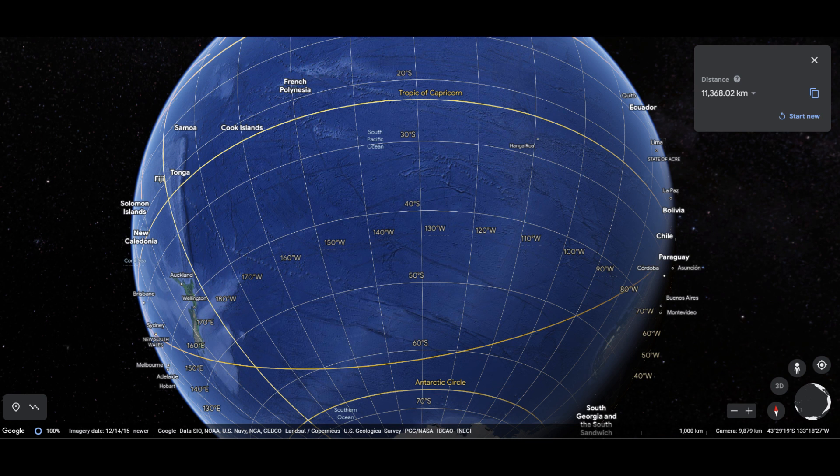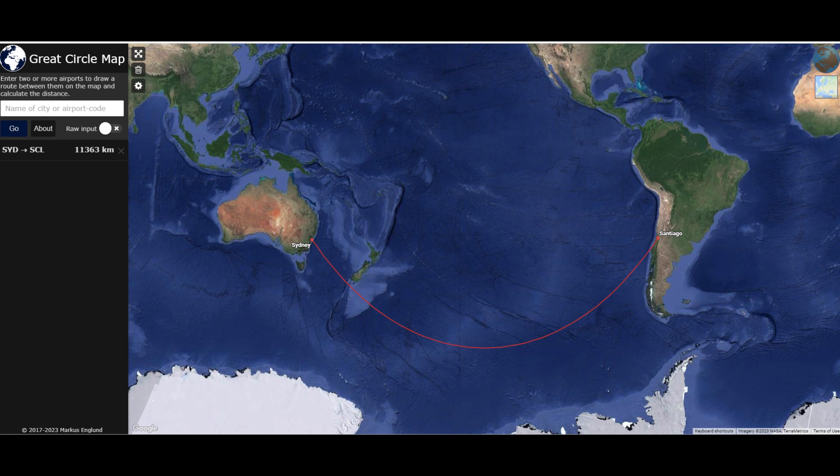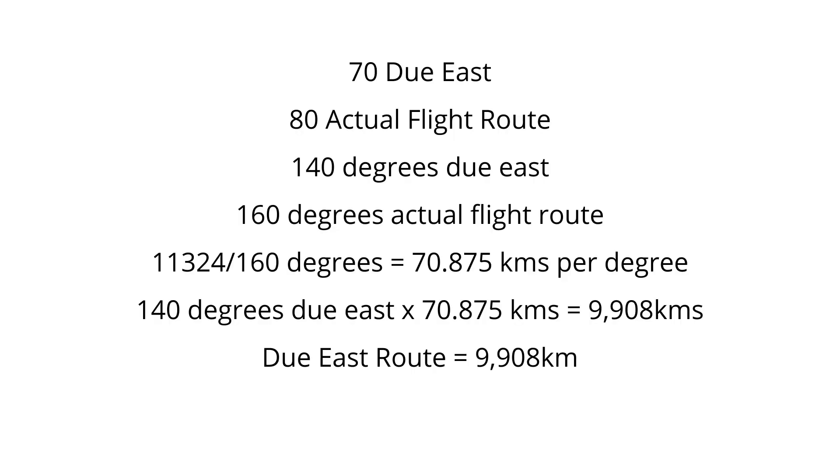If you divide the flight distance of 11,354 kilometres by the 140 degrees, you will arrive at 81 kilometres per degree. But, if you plot the actual flight route using graph paper and Google Earth, as I did, you'll get 70 units of measurement on the graph paper from due east, but you get 80 for the flight route that dips down to Antarctica.